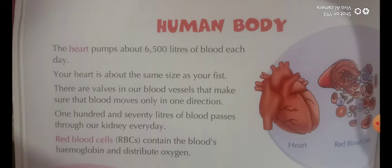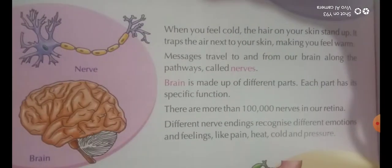Red blood cells contain the blood's hemoglobin and distribute oxygen. Humari body mein jo red blood cells hote hain, un mein blood ka hemoglobin hota hai, aur yeh body ke different parts ko oxygen distribute karte hain.